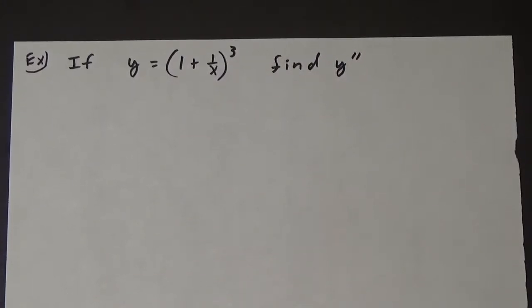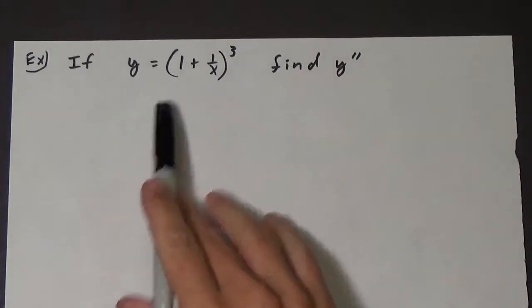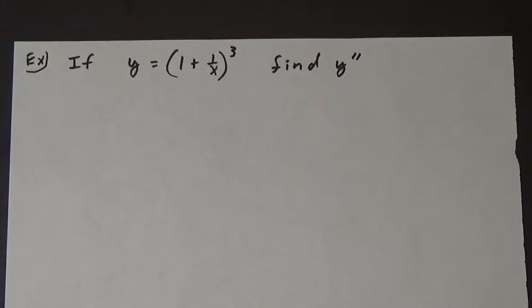Let's look at another example of using the chain rule. In this example, if y equals 1 plus 1 over x all cubed, this time we want to find y double prime, or the second derivative.